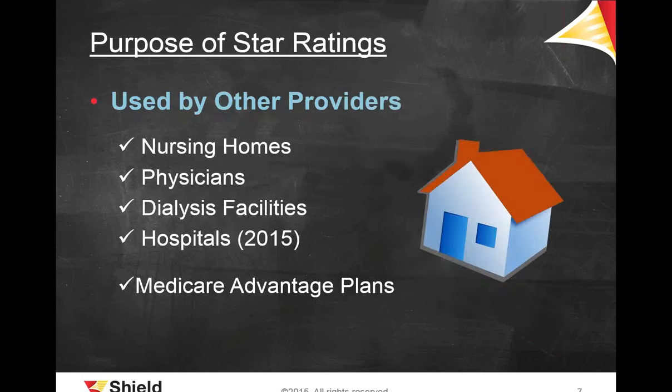Other providers currently under star ratings include nursing homes, physicians, dialysis facilities, and hospitals, which are coming later this year, along with Medicare Advantage plans. Each type of facility has its own set of quality measures reported to the public. The star ratings are immediately presented to consumers when searching for a facility or provider. CMS is waiting for home health agencies to come online, and then hospitals will be next. A specific date for hospital data has yet to be released, but it's expected sometime later this summer.